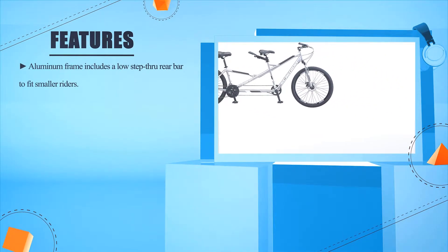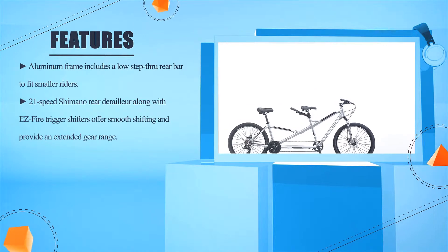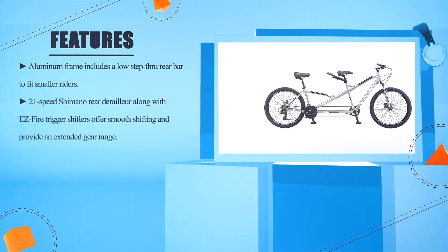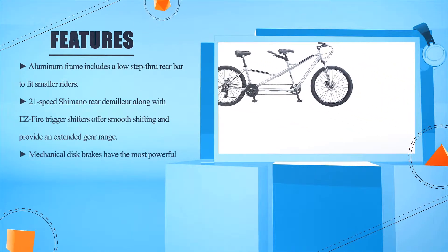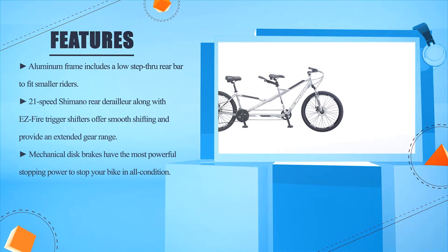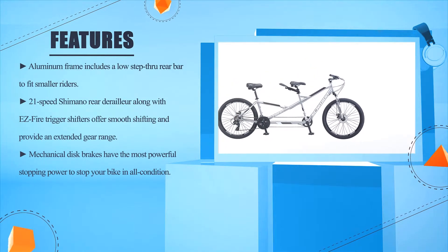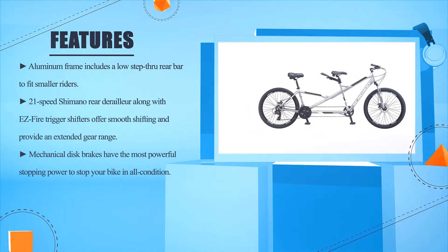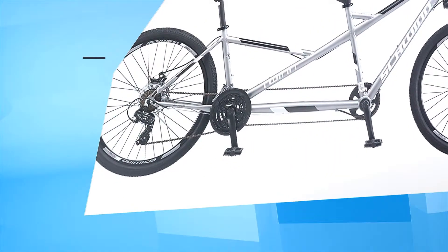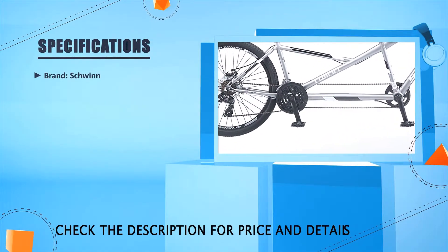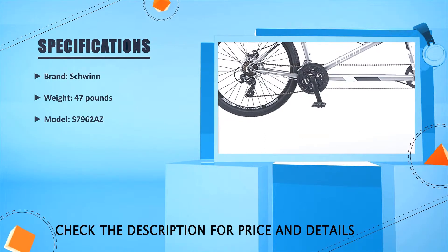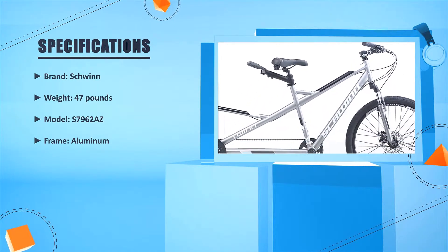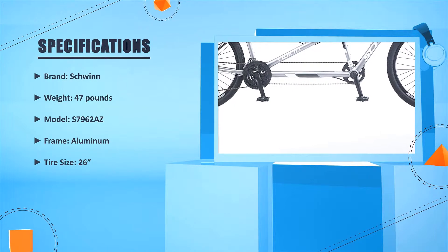Aluminum frame includes a low step-through rear bar to fit smaller riders. 21-speed Shimano rear derailleur along with EZ Fire trigger shifters offer smooth shifting and provide an extended gear range. Mechanical disc brakes have the most powerful stopping power to stop your bike in all conditions. Brand: Schwinn, Weight: 47 pounds, Model: S7962AZ, Frame: Aluminum, Tire size: 26 inches.